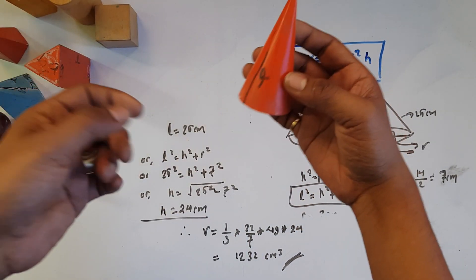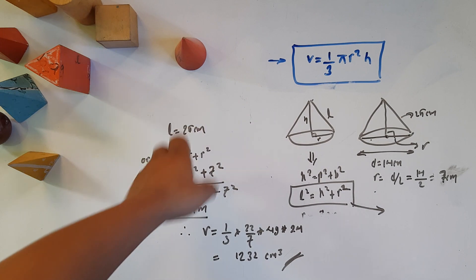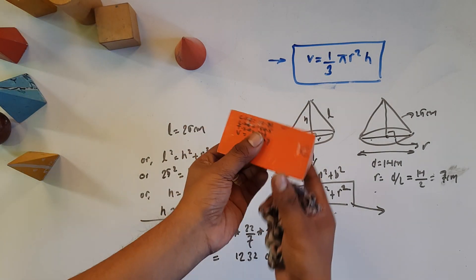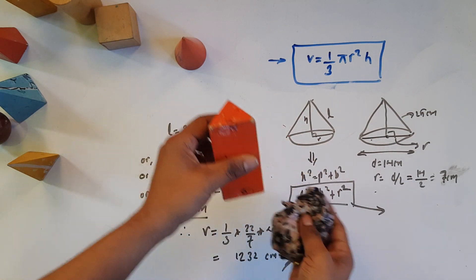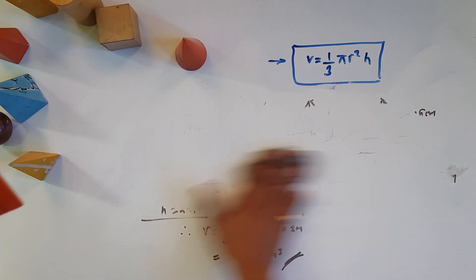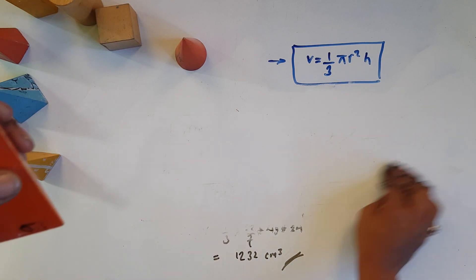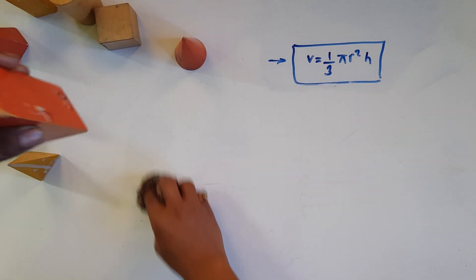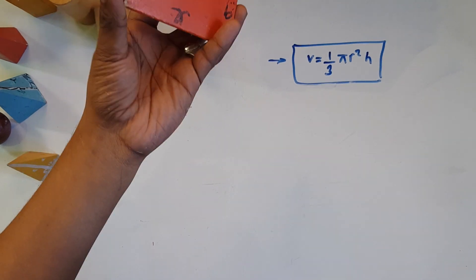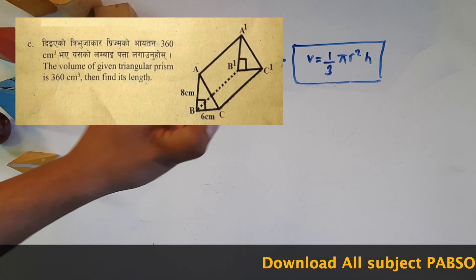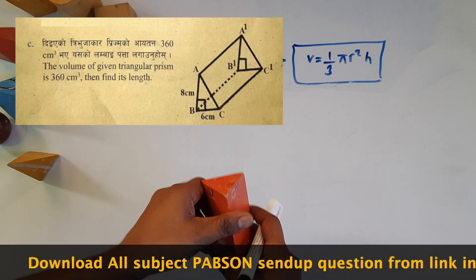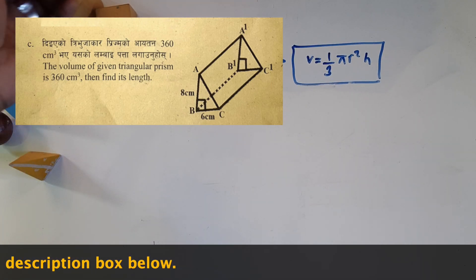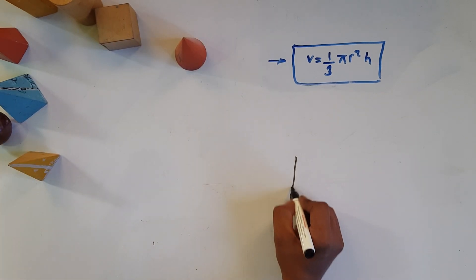Last time we covered the triangular prism. The formula for the volume of a triangular prism is in memory. Let us work together and also cover the total surface area.